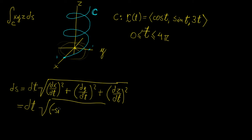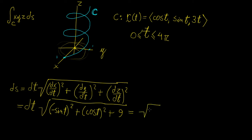Differentiating cosine of t gives minus sine t, so we get sine squared t. The second term, sine of t, differentiates to cosine t, giving cosine squared t. The last term, 3t, differentiates to 3, and 3 squared is 9. Adding sine squared and cosine squared gives 1, so we have 1 plus 9 under the square root, and ds becomes square root of 10 times dt.